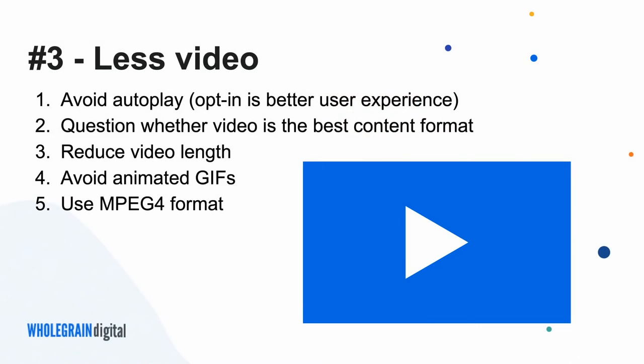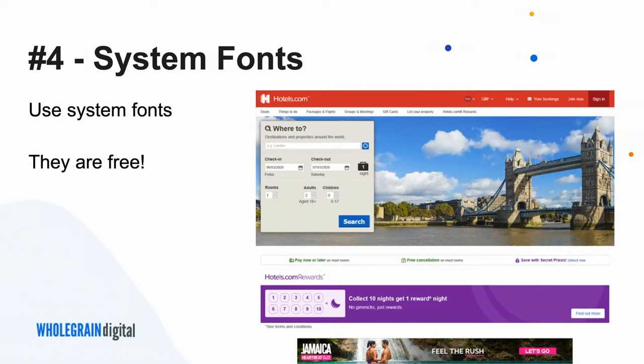Think carefully about what your users want and whether video is the right format. If you are going to use video, make it as short as possible. Avoid animated GIFs — they're really inefficient, basically just loads of GIF images stacked on each other. If you need something that looks like a GIF, convert it to a video instead, which is far more efficient. Use MPEG format or whatever the next most efficient thing is. Always use the most efficient file formats.